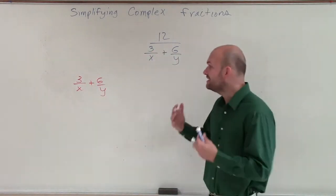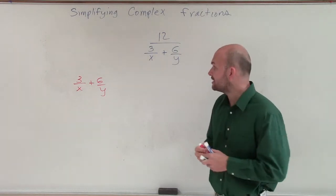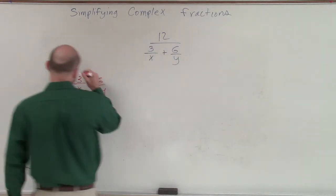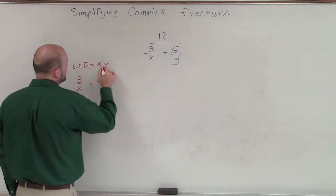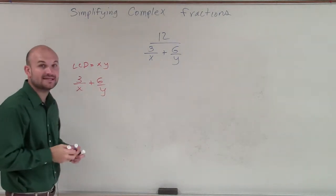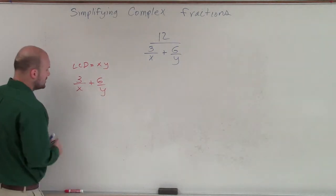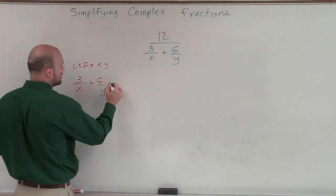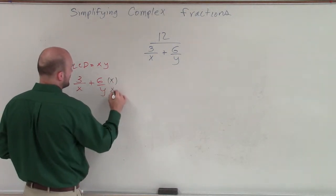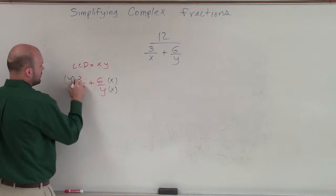remember we have to have the exact same denominator. So I look at this and I determine that my LCD is going to be xy, right? That's going to be the least common denominator for these two values. So to get xy for my denominators, I'll multiply this fraction by x over x and this one by y over y.